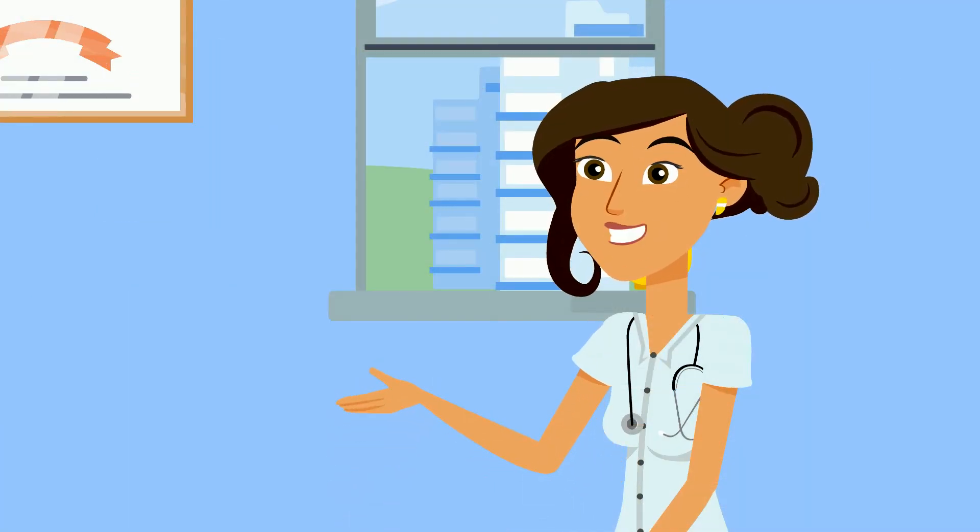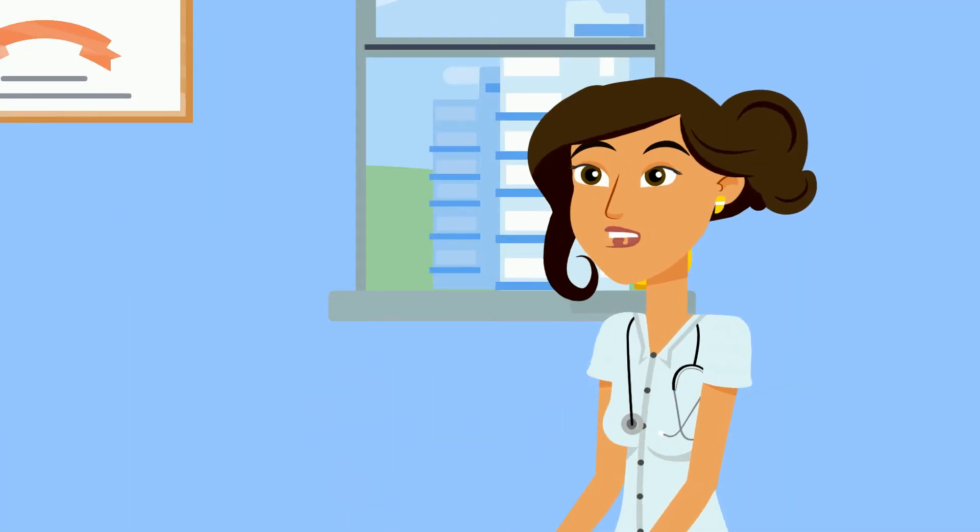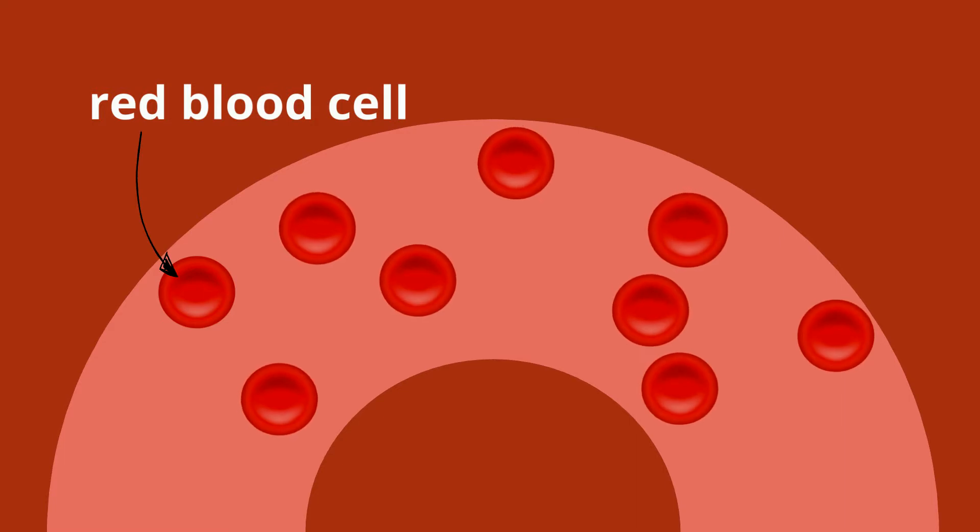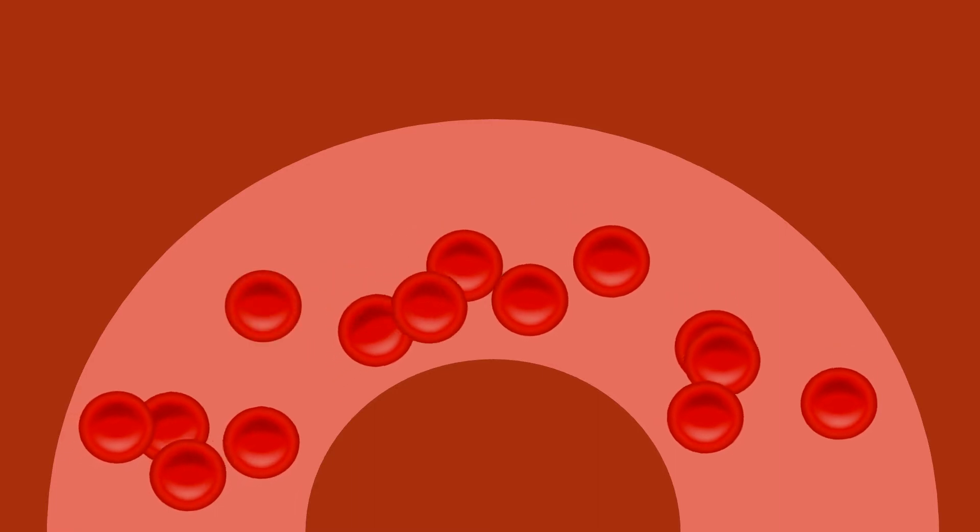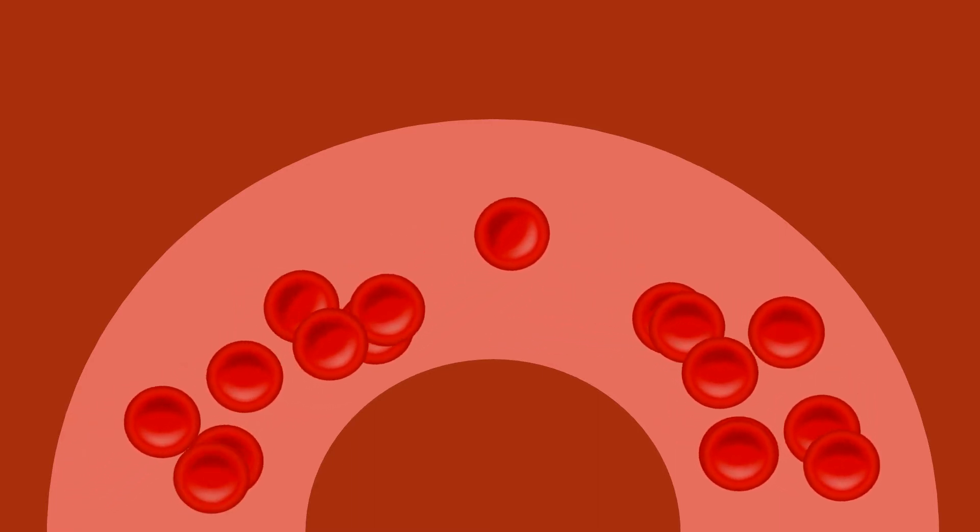Sure, everyone has red blood cells and inside the red blood cells is hemoglobin. Hemoglobin's job is to carry oxygen all through our body. Normal red blood cells are round and flow easily through our veins and arteries, like cars on a highway without traffic.